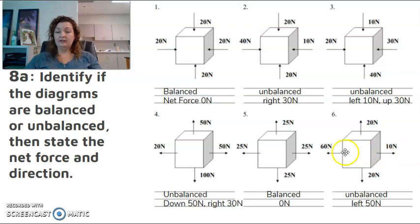Last one, number six, right and left. My force going left is bigger. Therefore, my object will be going left and I subtract that. So 60 minus 10 gives me 50. And then my up and down direction are the same, 20 and 20. So it's balanced up and down, but unbalanced right and left. Therefore, the entire thing is still considered to be unbalanced.